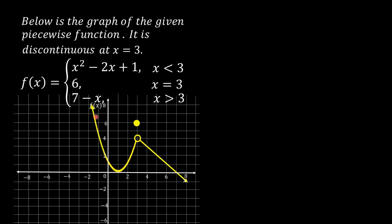On the graph, the curve for x squared minus 2x plus 1 applies for x less than 3, and the line 7 minus x applies for x greater than 3. There is a hole in the graph at the point (3, 4).